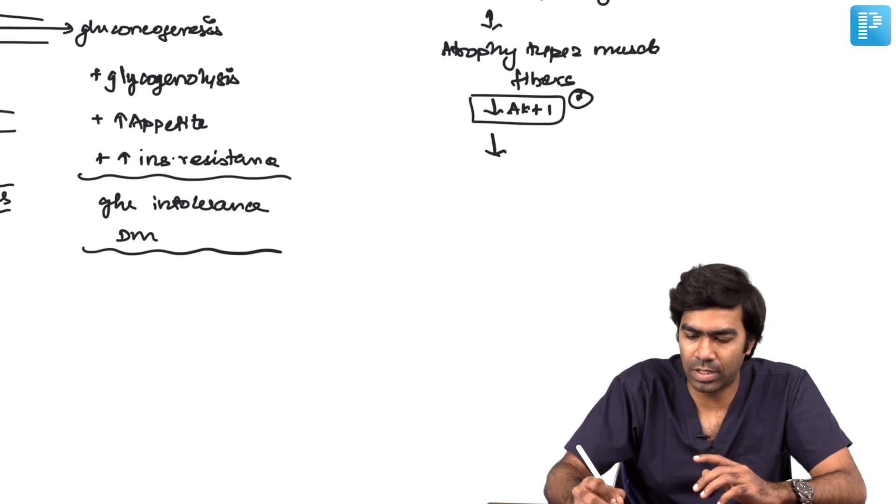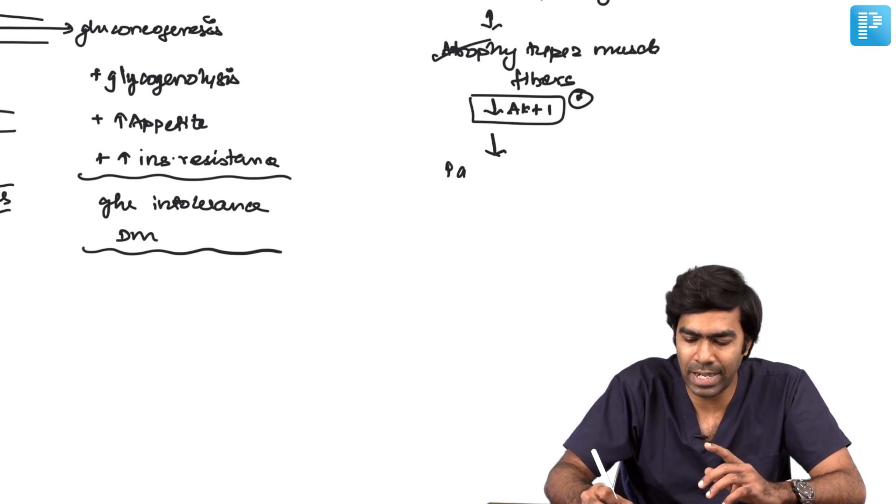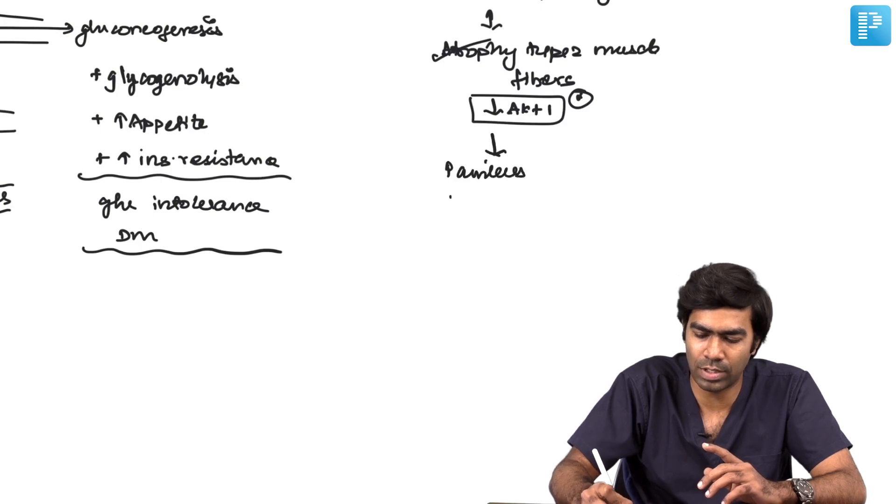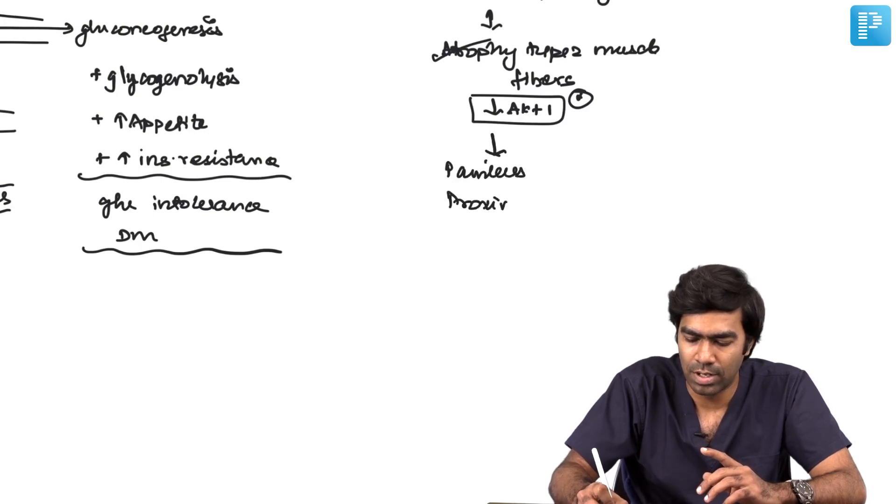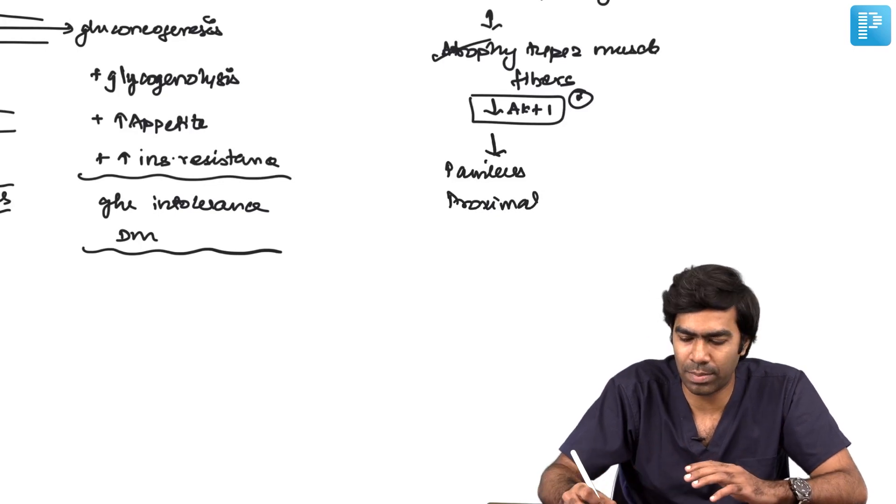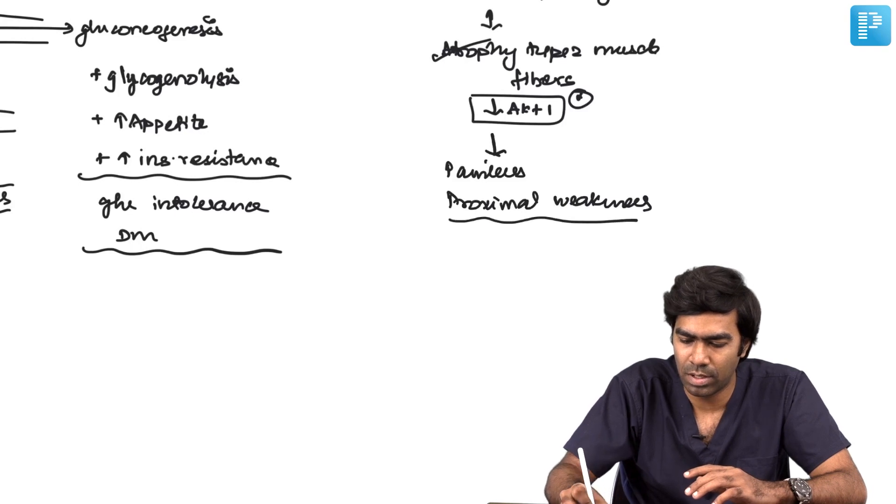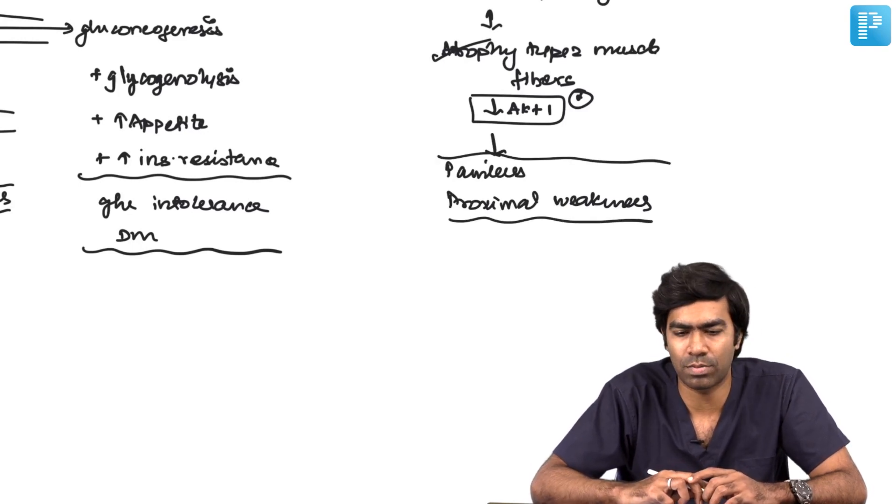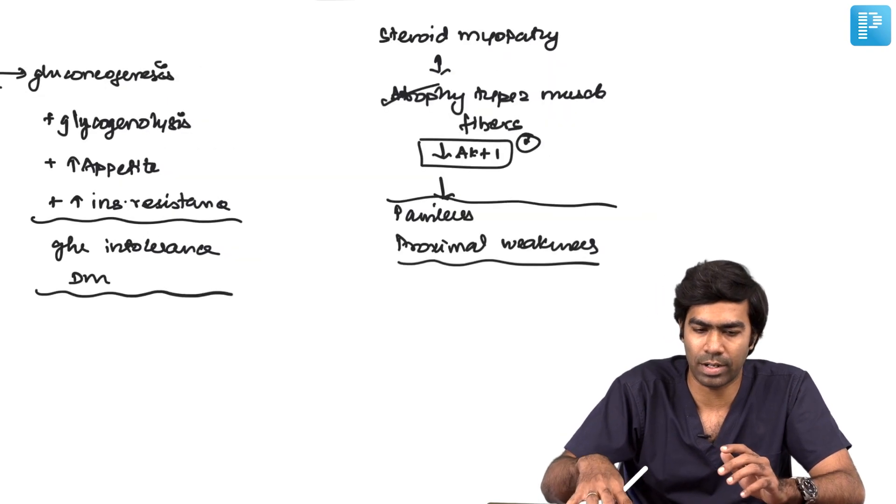This atrophy of type 2 muscle fibers will result in painless proximal myopathy. Even though there are some myopathies which produce distal weakness like myotonic dystrophy type 1, in general, the majority of myopathies will be proximal only.